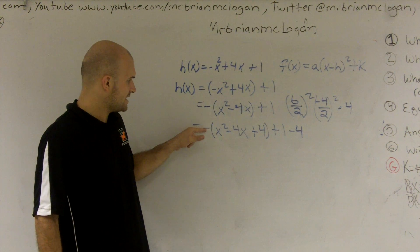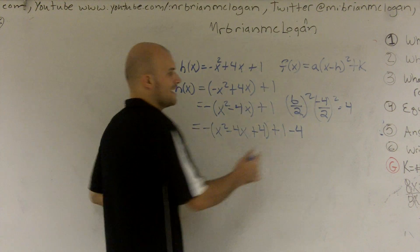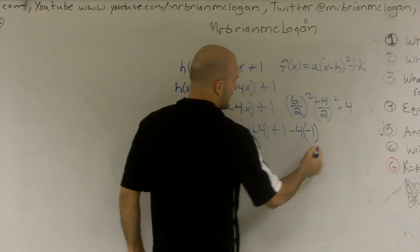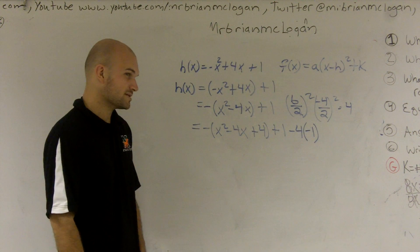So since I'm multiplying this negative times this 4, I also need to multiply this by a negative 1. Does that kind of make sense?